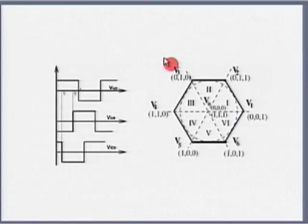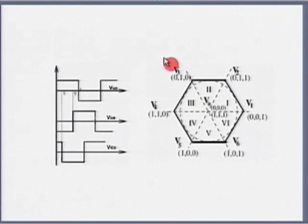Having turned on the device, if I allow the device to remain in that state for 180 degrees, the line to line voltage waveform has a pulse of 120 degree duration. The magnitude is the supply voltage VDC, and for the remaining 60 degrees the output voltage is 0 in the positive half and the negative half is just the opposite.